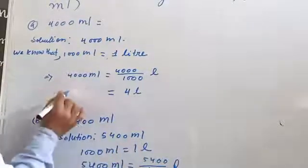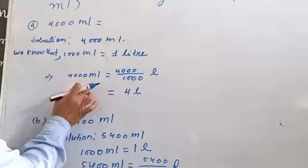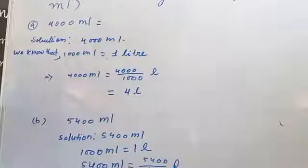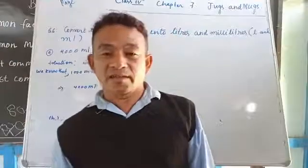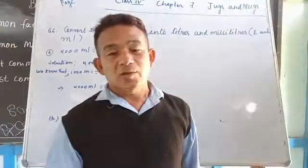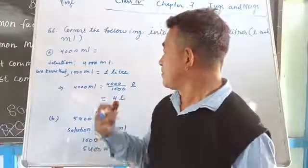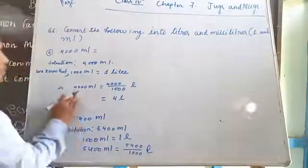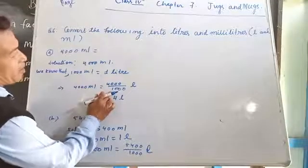Hamare paas 4000 ml hai. 1000 ml ka one liter hota hai, toh 4000 ml ka kitna hua? So obviously it is 4 liters. Toh 4 liter ko kaise nikala? We have to follow a technique — how to find out that answer.